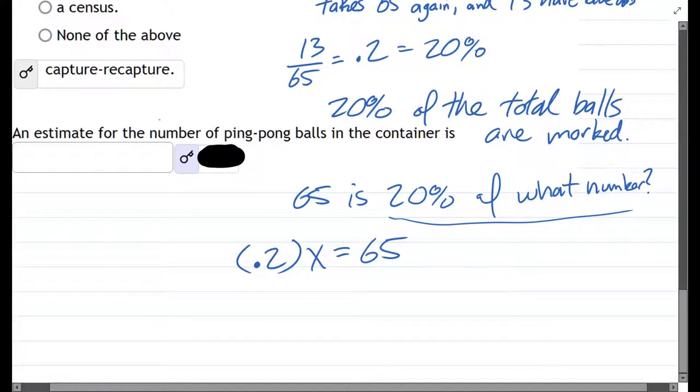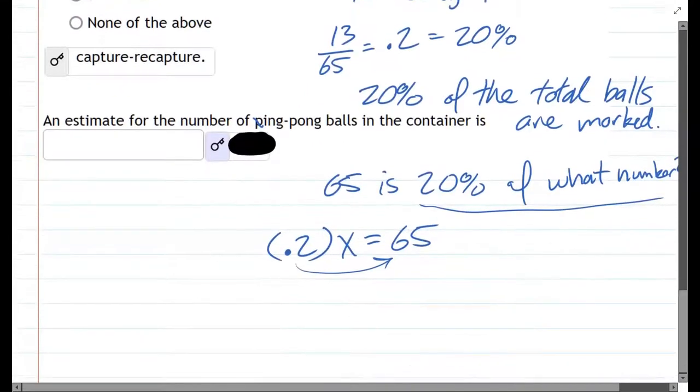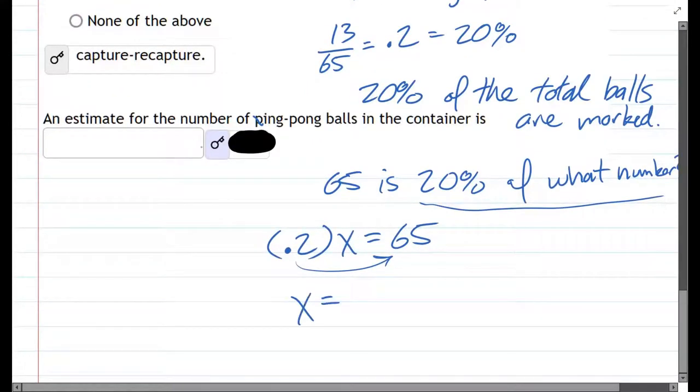And we want to un-multiply. We want to get this on the other side, so we divide it. So that's going to be 65 divided by 0.2.